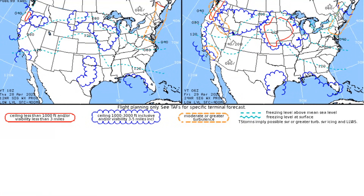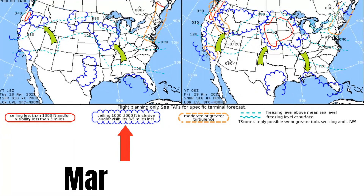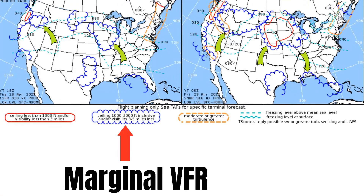This puffy blue cloud symbol indicates ceilings between 1,000 and 3,000 feet and/or visibility between 3 and 5 statute miles. This is what we call marginal VFR, because whether or not you can legally take off VFR depends on the airspace you're in and what that specific field is reporting.